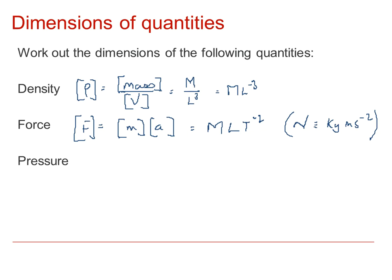Pressure is force over area, so the dimensions of pressure will be the dimensions of force divided by the dimensions of area. We've just derived force as M L T to minus two, and area is length squared. Therefore, the dimensions of pressure are M L to minus one T to minus two.